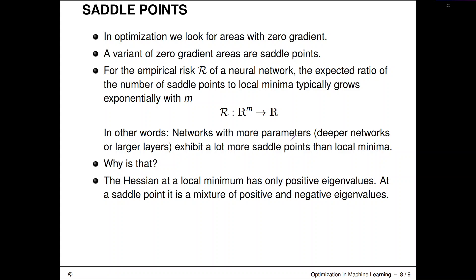The expected ratio of number of saddle points compared to local minima actually grows exponentially with the number M of parameters that our neural network has. This means there are a lot more saddle points than local minima typically in a neural network. This should warn us that local minima are usually not the problem, but saddle points are.